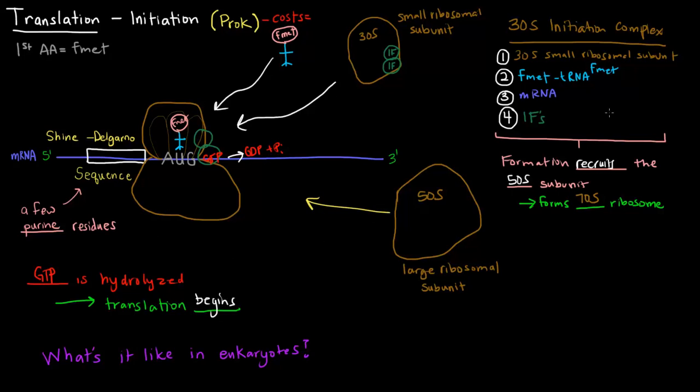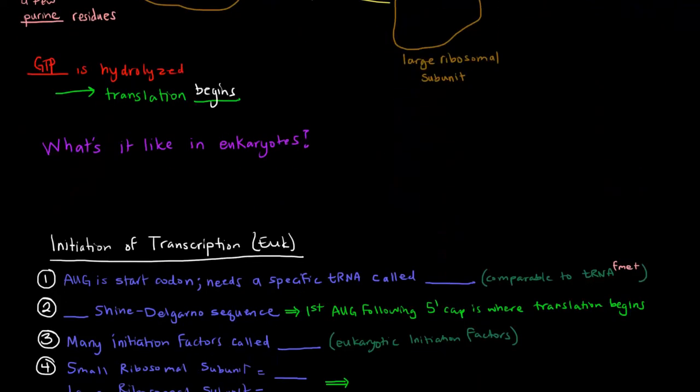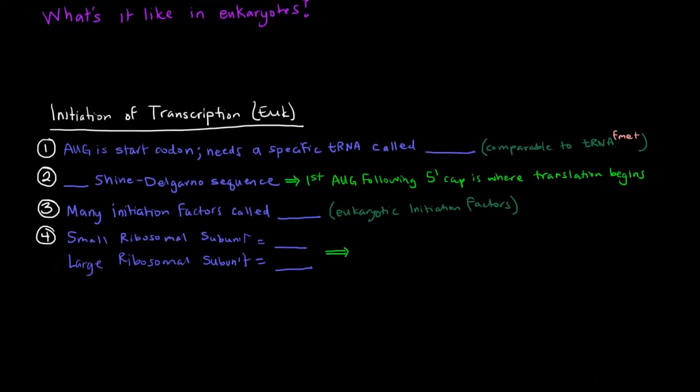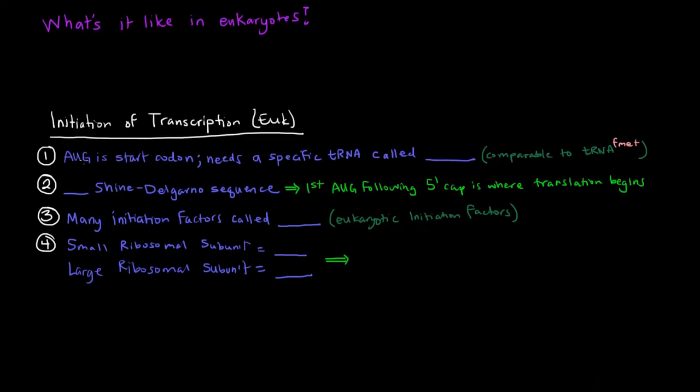How is this different in eukaryotes? There are a few key differences. AUG is the start codon, just like it is in prokaryotes, but eukaryotes, they need a specific tRNA called tRNAI, which the I stands for initiator. So this tRNA is the initiator tRNA. It's comparable to the tRNA F-MET, which is the initiator tRNA in prokaryotes.